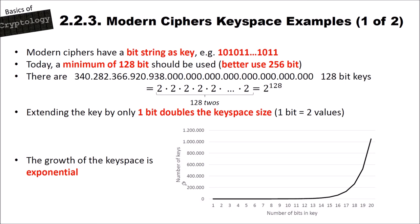This doubling with each added bit represents exponential growth. On a graph with the number of key bits on the x-axis and the number of distinct keys on the y-axis, starting around 18–20 bits we already exceed one million keys — and the key space sizes explode rapidly. A 128-bit keyspace clearly cannot be searched through today, and probably not in the future either, unless quantum computers become capable of doing so.